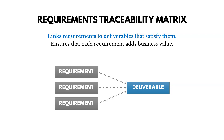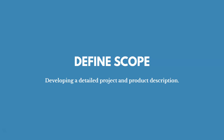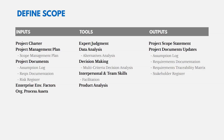Now that we've planned scope management and collected requirements, we define scope — developing a detailed project and product description, often a narrative a few paragraphs long. In define scope, one of the inputs from the project management plan is the scope management plan, because it tells you how to define your scope. You could also have project documents like requirements documentation. Enterprise environmental factors and organizational process assets are also key inputs. Tools include alternatives analysis to figure out different options for getting the work done, facilitation, and product analysis.